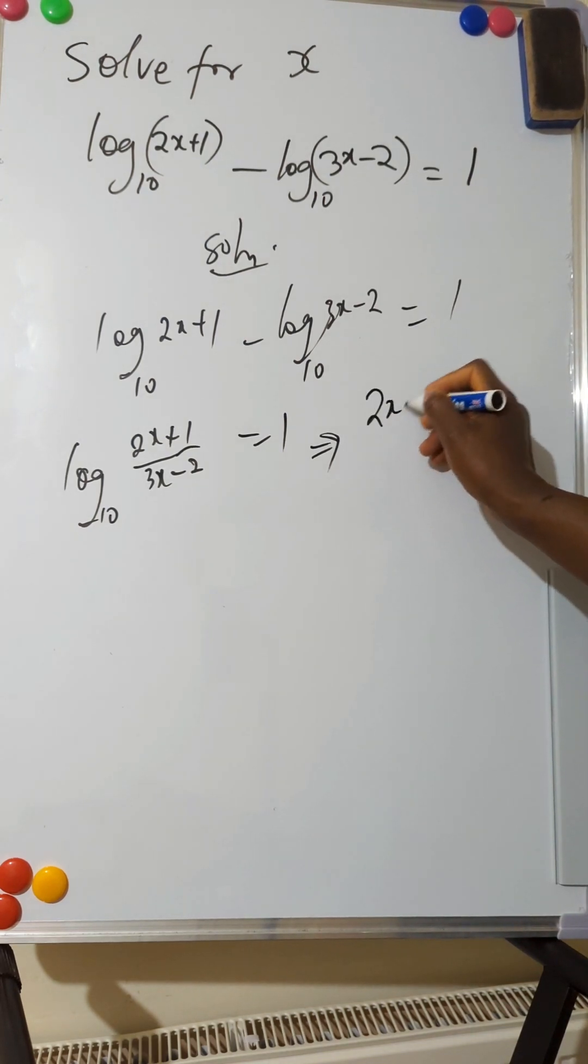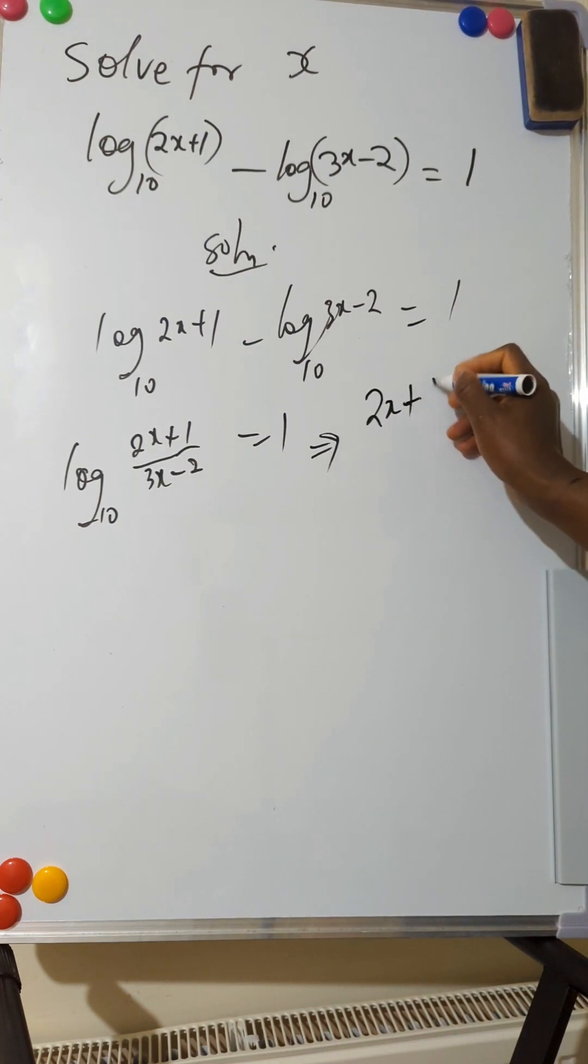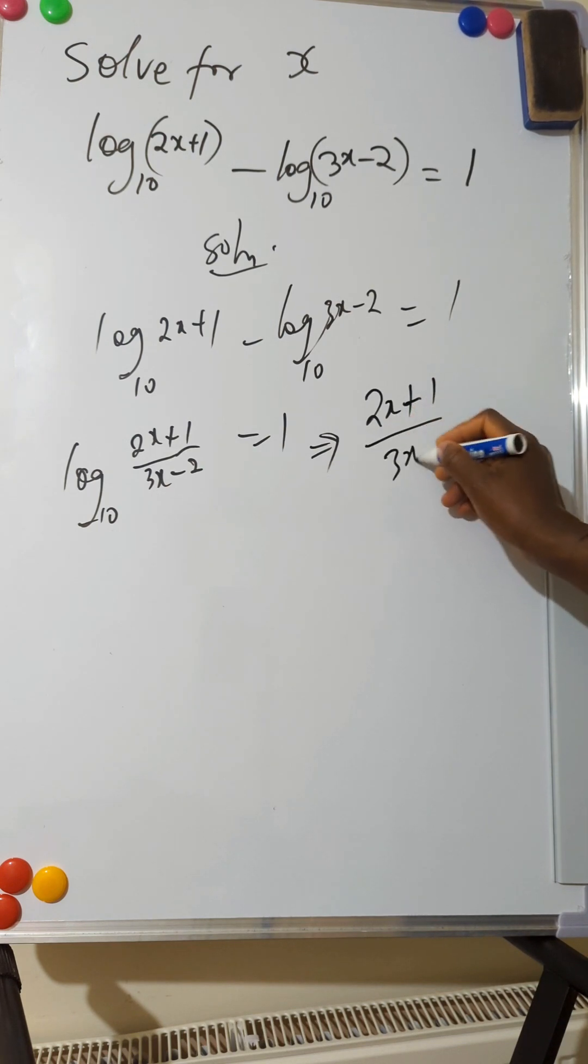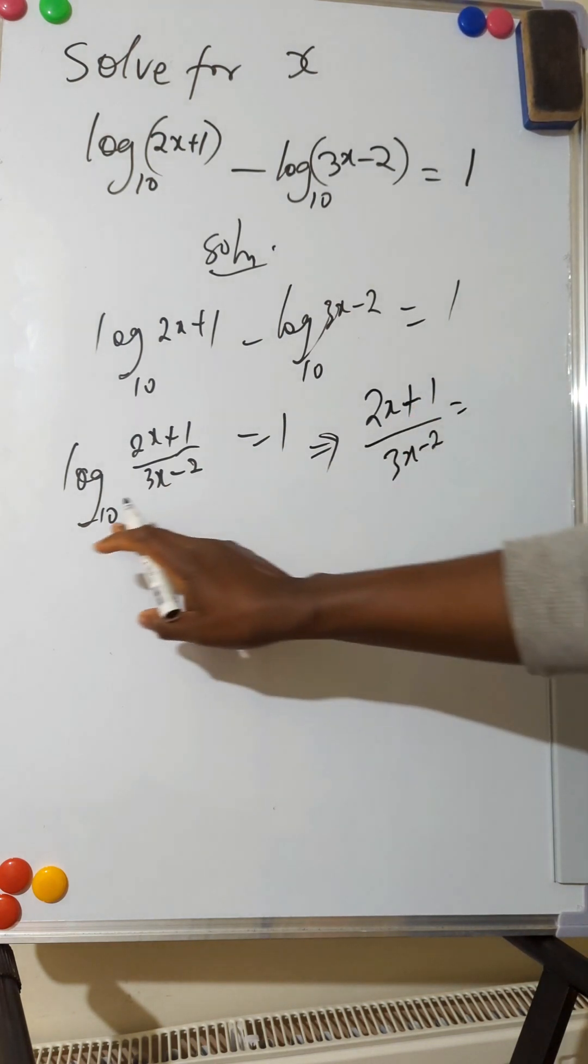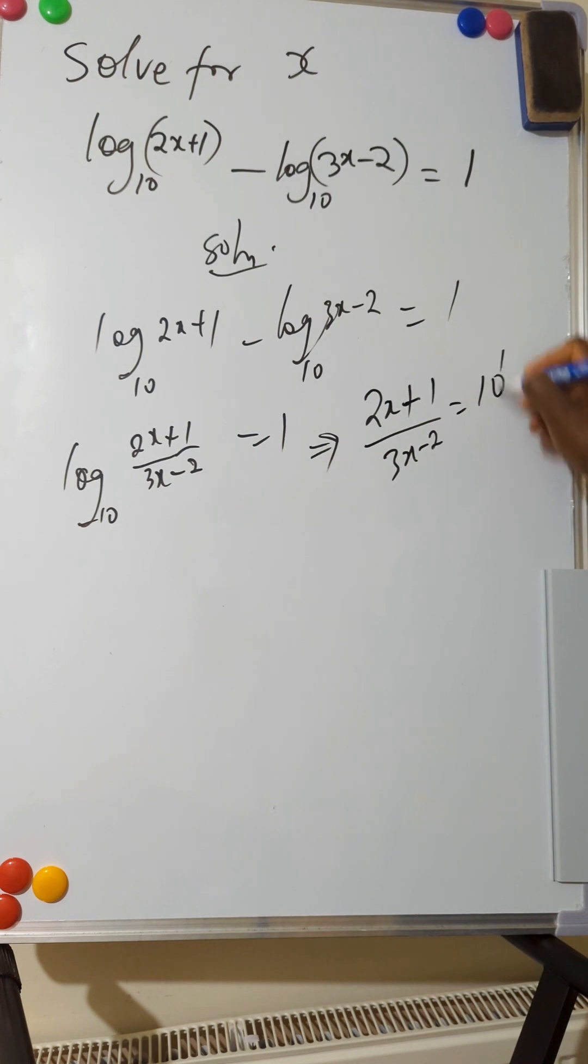This implies that (2x+1) over (3x-2) equals 10 raised to power 1. Hope you still remember the laws of logarithm.